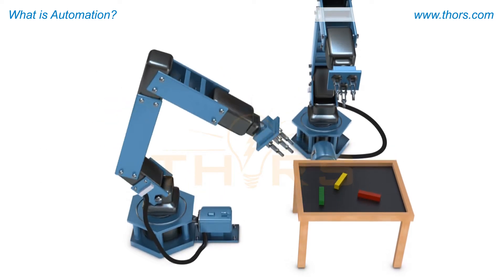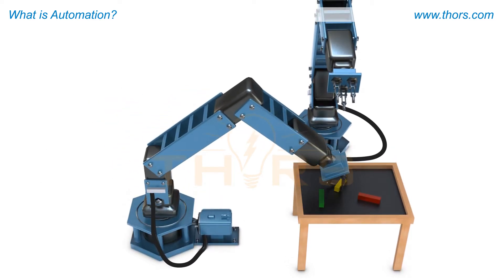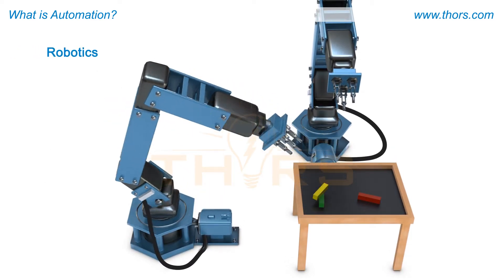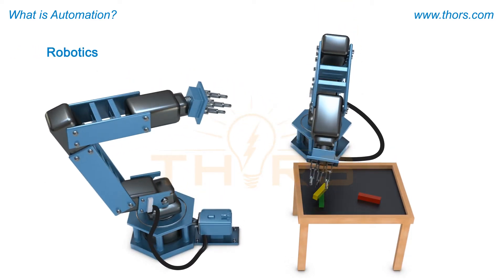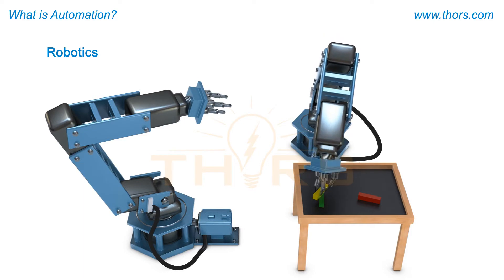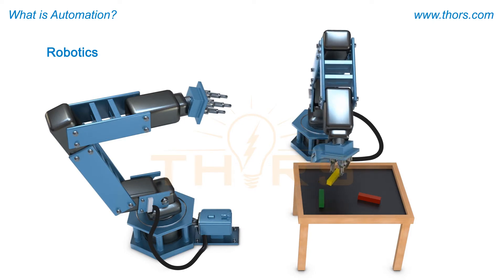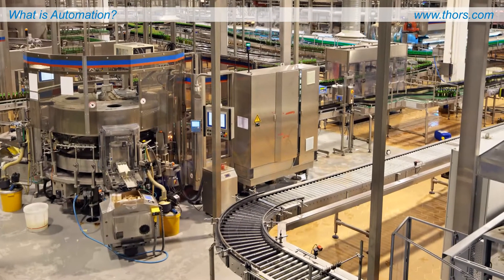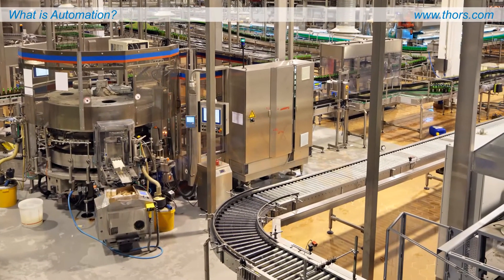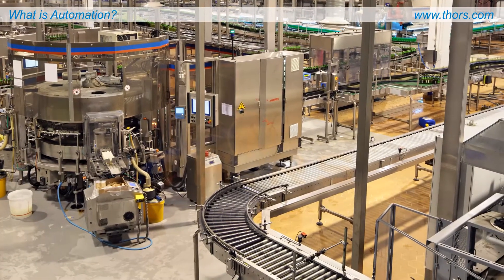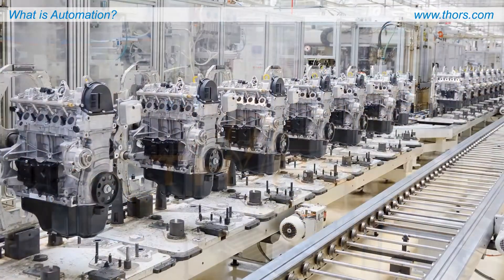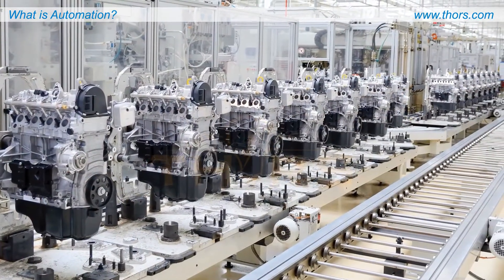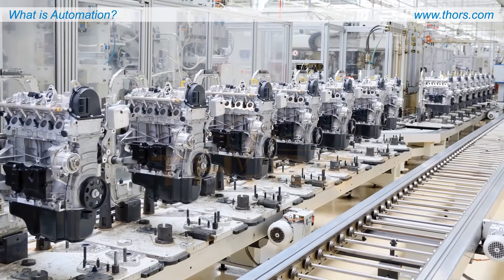Oftentimes automation is associated with robotics, but many other machines are often controlled by automation. For instance, some companies may only choose to automate a single device or a single machine, while others may automate an entire factory.